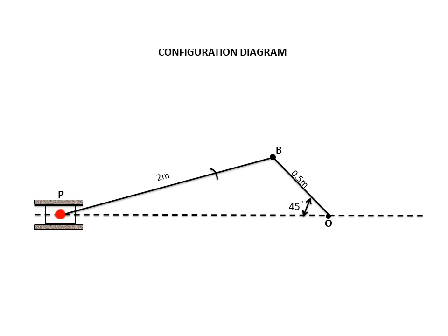Now there is a point E given in the question. Take the gudgeon pin P as center. The point E is located at a distance of 1.5 meter from the gudgeon pin. In the 1:20 scale, 1500 mm divided by 20 gives 75 mm. Take 75 mm in your compass, put the needle at P, cut an arc on the connecting rod line, and name that point E. Also mark the direction and speed of rotation. That completes the configuration diagram.